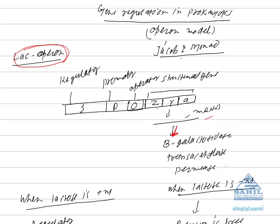Adjacent to operator is promoter which is RNA polymerase binding site. And regulator is represented by I-gene which is involved in production of protein called repressor.